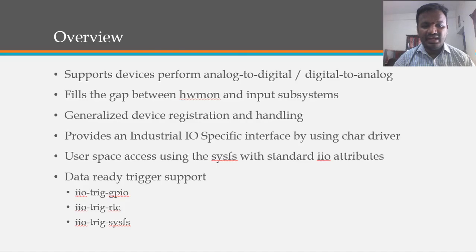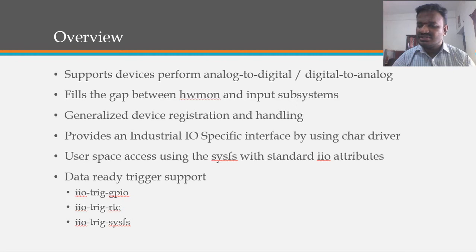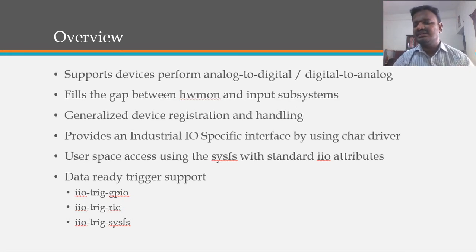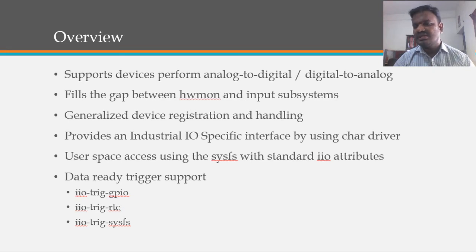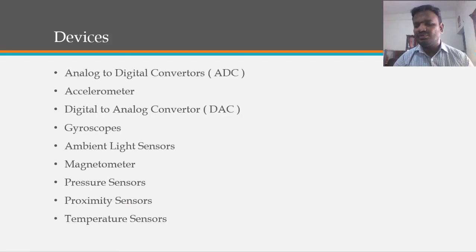IIO also has a trigger mechanism, similar to an interrupt. For example, in the case of ADC, once analog-to-digital conversion is done, all that data has to be updated to user space. That needs a data-ready trigger — something based on GPIO, RTC, or sysfs — to inform user space so it can access the data.